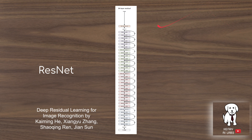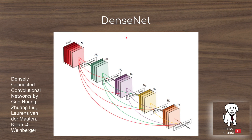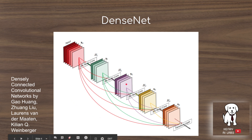ResNet added to the neural architecture the skip connection, propagating ahead earlier features into later layers. DenseNet uses the same skip connection idea, but instead of just going one layer ahead, it takes all of the previous feature maps to the next layer. You can see how H3 takes in H2, H1, and the input as its input to its convolutions.